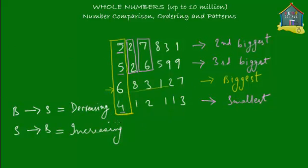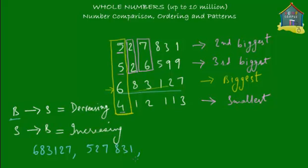Let's take the four numbers we just worked with and arrange them in decreasing order — starting from the biggest. The biggest number is 683127, then the second biggest is 527831, third biggest is 526599, and the smallest is 412113. That's your decreasing order — 683127 is the biggest and we go down, down, down to the smallest.